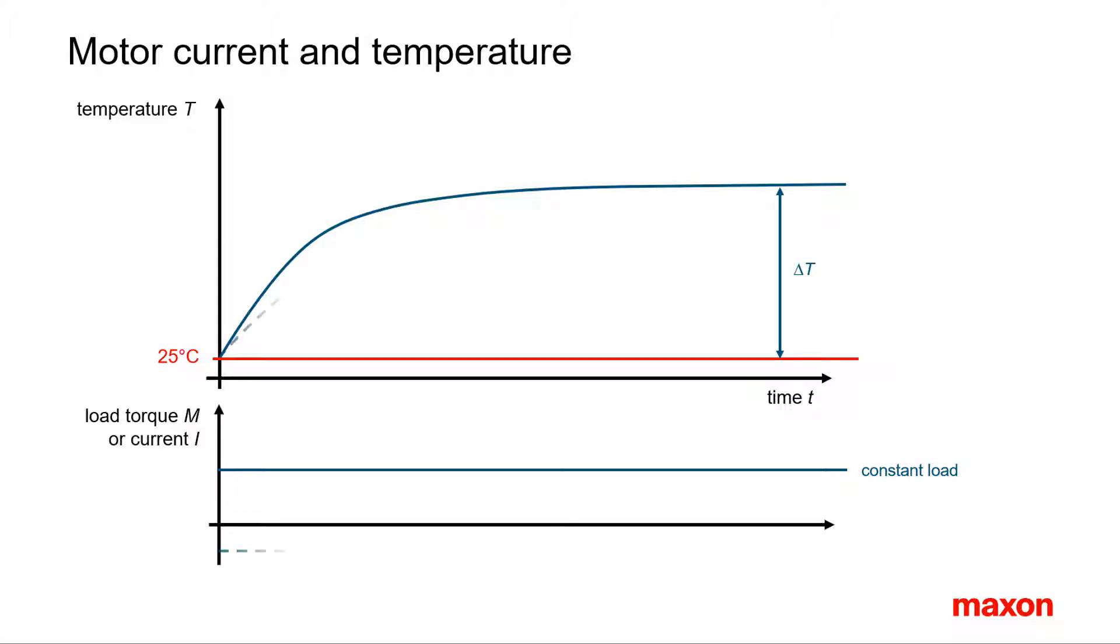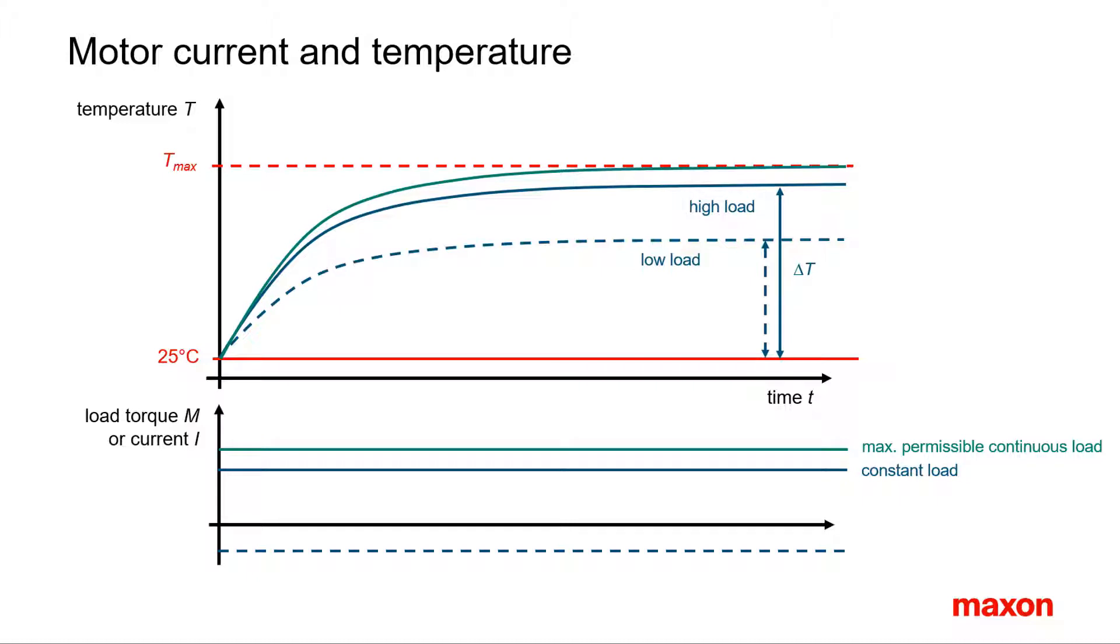At lower absolute current load, the resulting end temperature will be lower. It doesn't matter that the current flows in a negative direction; the heating is the same. The maximum permissible temperature defines the maximum permissible load current, or nominal current.